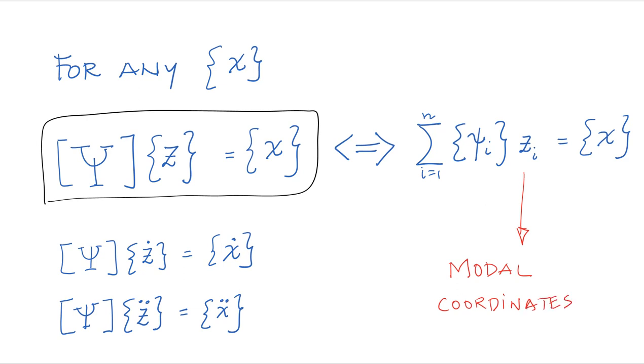It's very important. What does it mean? It basically means that these are the coordinates of x expressed in the basis of the mode shapes. And this is why we call them modal coordinates. These are the modes. And these are modal coordinates.